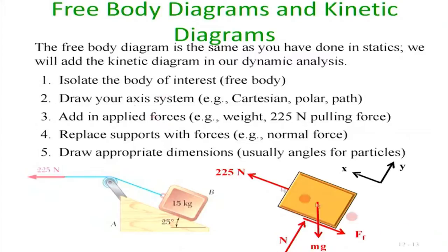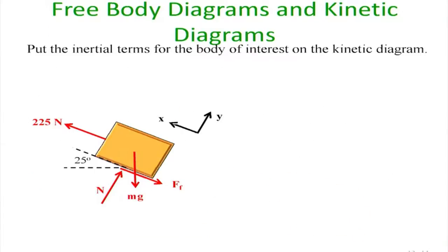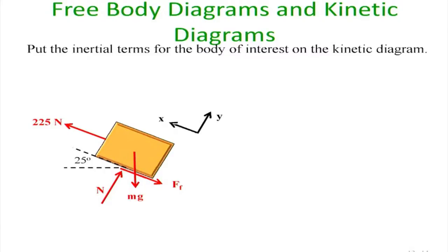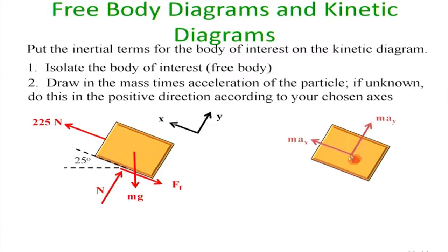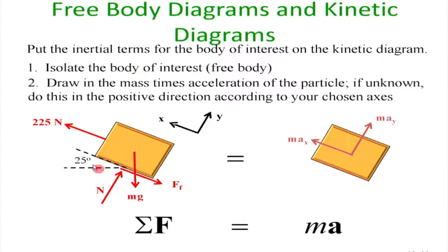We isolate the body and find out what are the possible forces acting on it. Once we realize these forces, we see that they lead to acceleration in the y-direction and the x-direction. This is the kinetic diagram — we show the mass times accelerations and the forces. The key principle is that F equals ma.